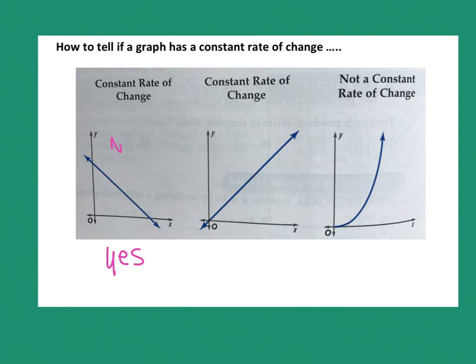So this one has a negative rate of change. And actually you guys can just write negative. You don't have to write rate of change. Just let's just write negative. And it is a constant rate of change because it's making a straight line. That's all I look for: straight line.